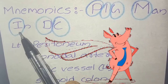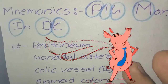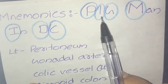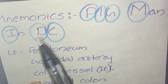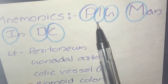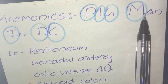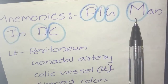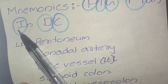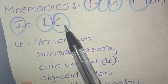The mnemonic for these relations is PIGMIDC — P for peritoneum, I for ileocolic vessel, G for gonadal vessel, M for root of mesentery, I for ileum (terminal part), D for duodenum (third part), and C for the right colic vessel on the right side.